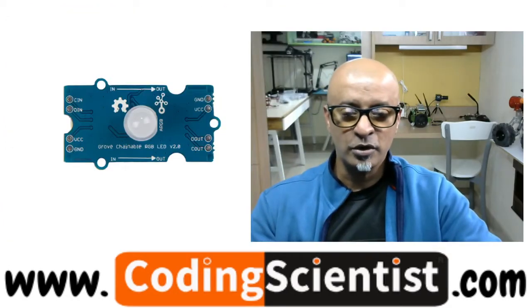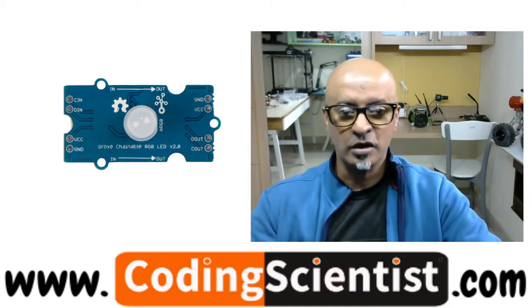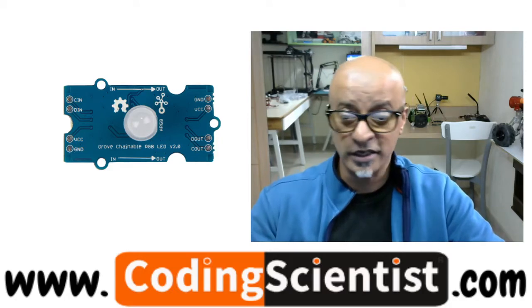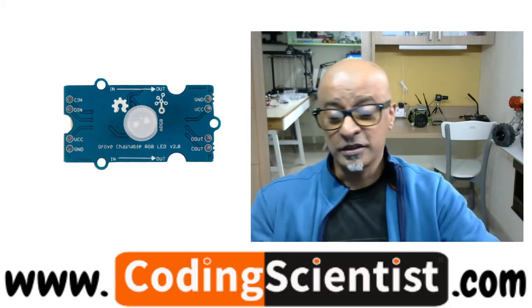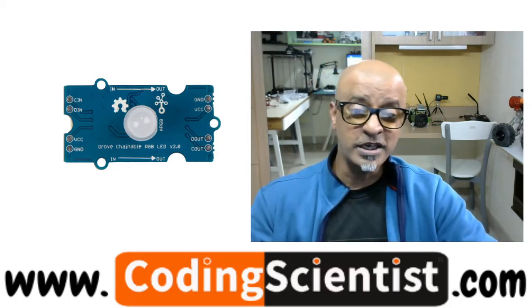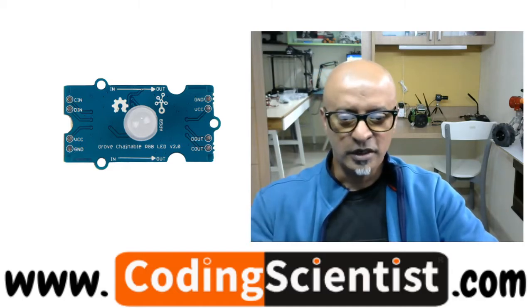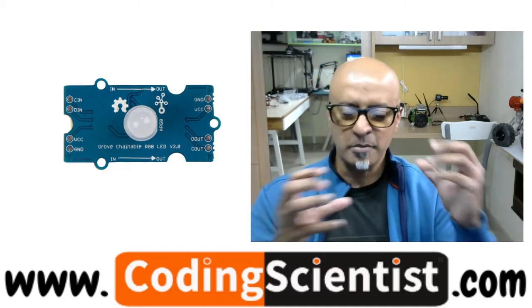I'm going to show you a sensor module called chainable LED. What is a chainable RGB LED? This is basically based on P9813 chip, a micro small chip embedded within the RGB LED module.